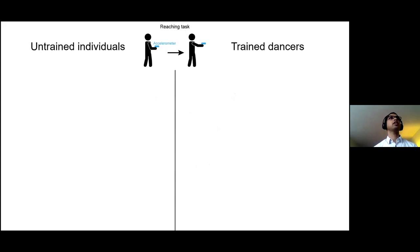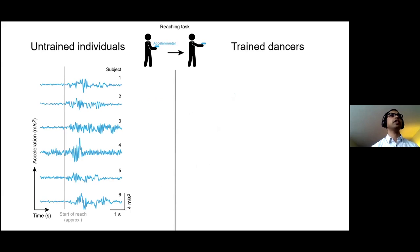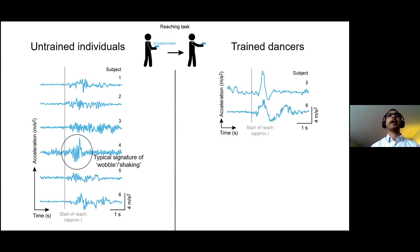What does it look like in untrained individuals? On the left, I'm showing data from untrained individuals where the gray bar shows the start of their movement. Typically you see a signature of wobble or shaking. Trained dancers can do this without producing the wobble, albeit they have a different signature of acceleration when they move their arm. The wobble, where does it come from? It comes specifically from the type of control mechanism.